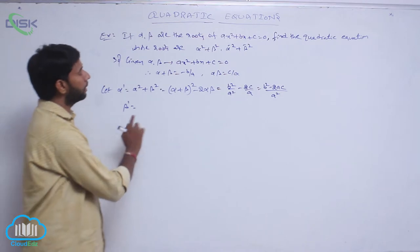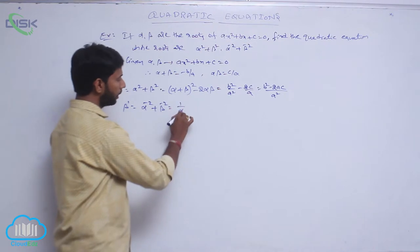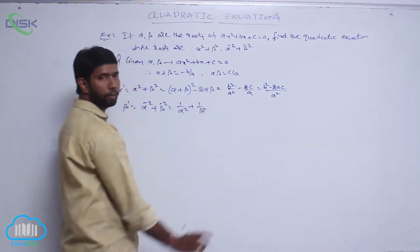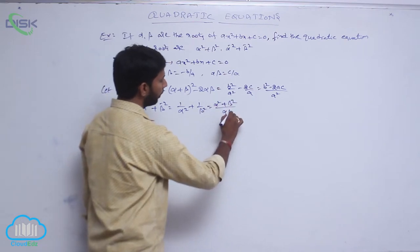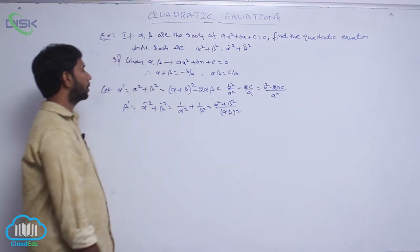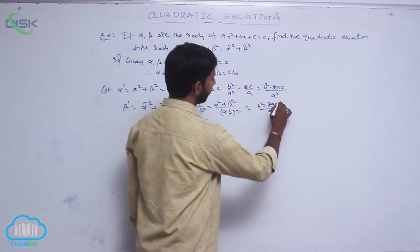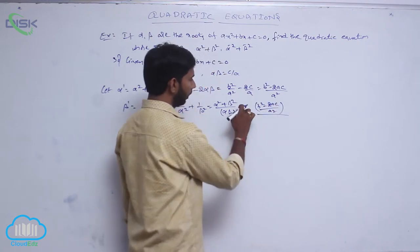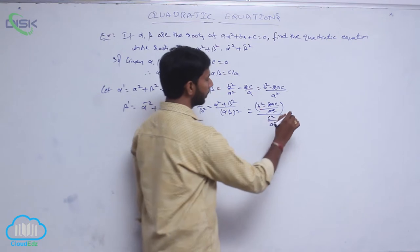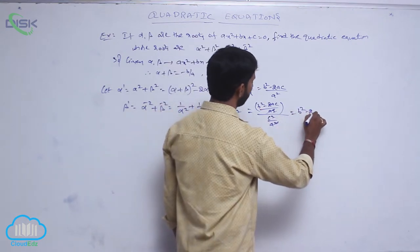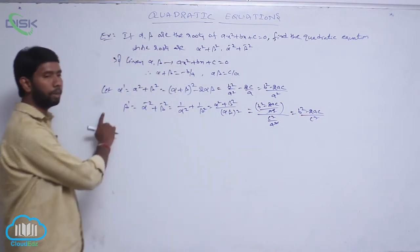Let β' = α⁻² + β⁻² = 1/α² + 1/β² = (α² + β²)/(αβ)². Substituting α² + β² = (b² - 2ac)/a² and (αβ)² = c²/a², the a² terms cancel, giving β' = (b² - 2ac)/c².